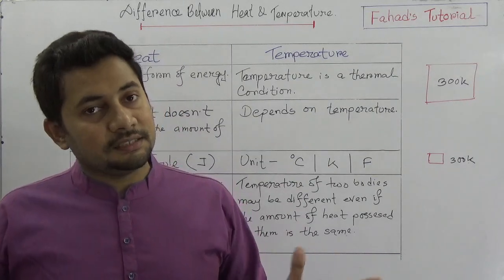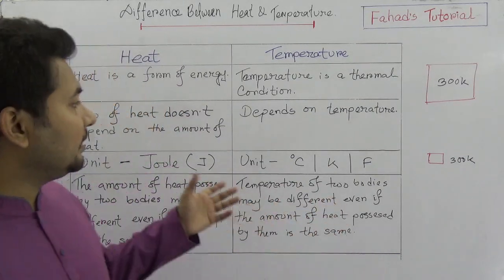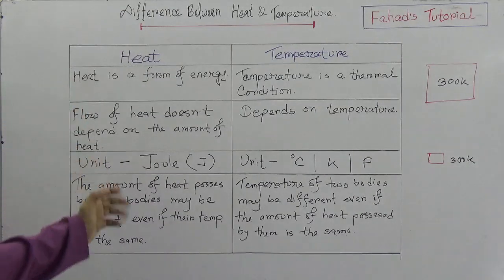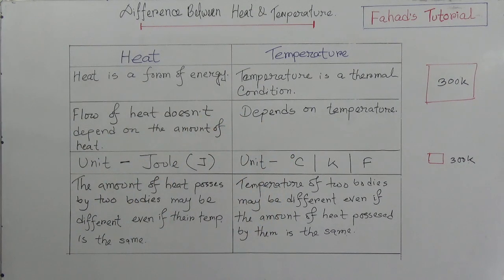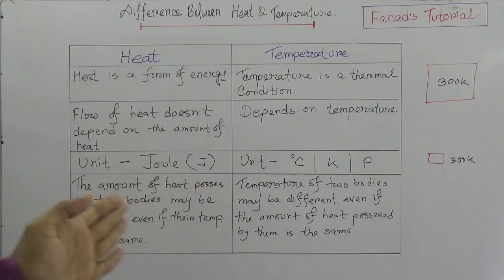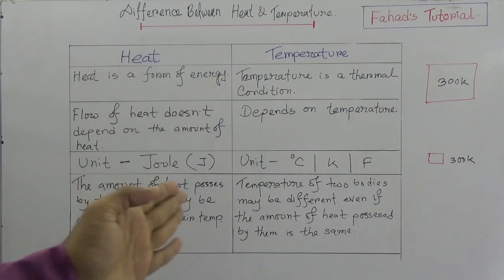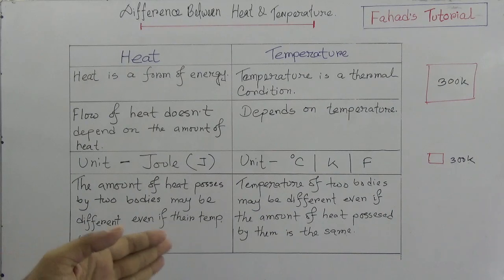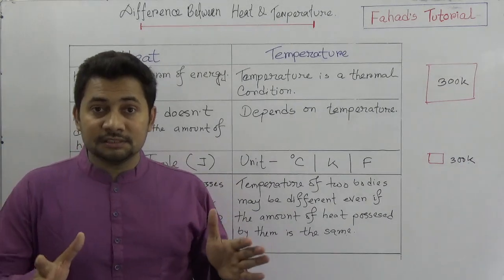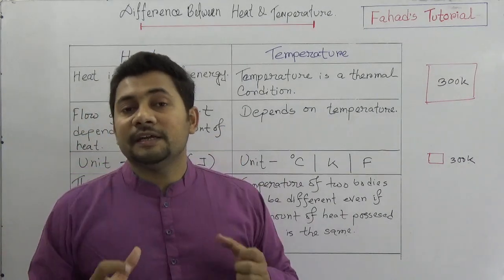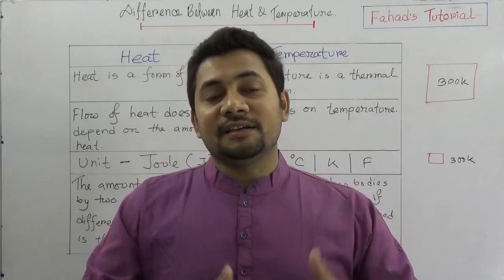So to summarize, we have four key differences between heat and temperature: first, their definitions — heat is a form of energy and temperature is a thermal condition; second, the flow of heat depends on temperature, not the amount of heat; third, the units are Joule for heat and Kelvin for temperature; and fourth, two bodies can have the same temperature but different amounts of heat, and vice versa.